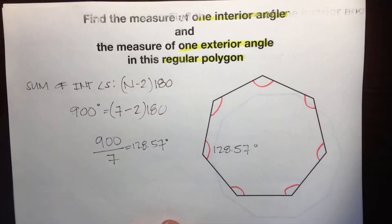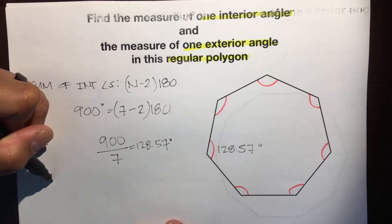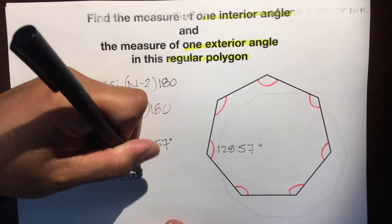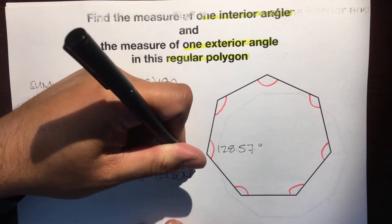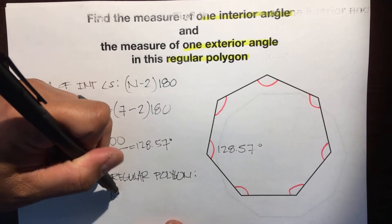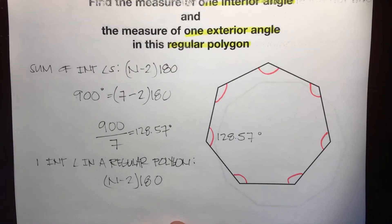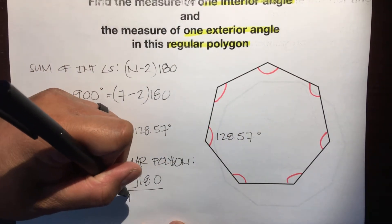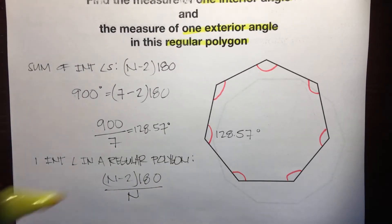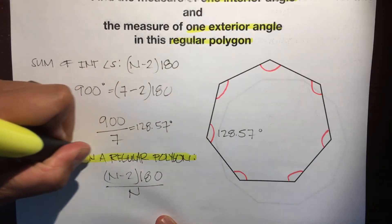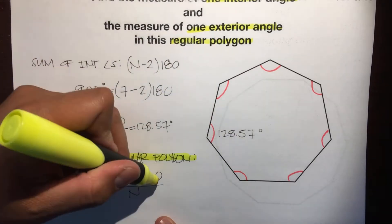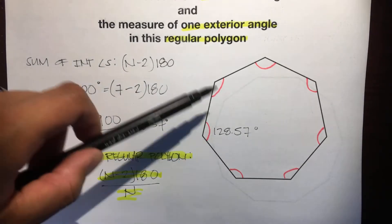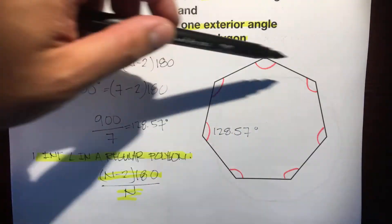So what's the formula? We took the sum of interior angles, which is n minus 2 times 180, and divided it by the number of angles or sides, which is n. So the formula for one interior angle in a regular polygon is: (n minus 2) times 180, divided by n. All 7 added up to 900, so we divided by 7.